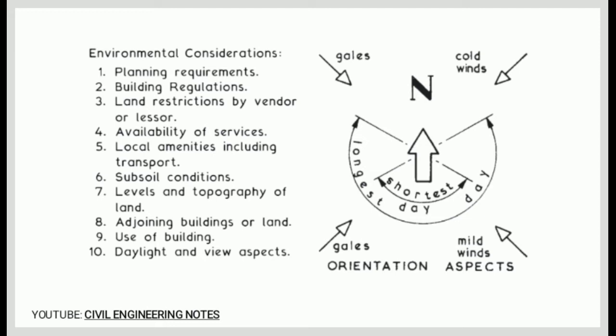On this slide, we are listing 10 environmental considerations before construction: 1. Planning requirements, 2. Building regulations, 3. Land restrictions by vendor or leasor, 4. Availability of services, 5. Local amenities including transport, 6. Subsoil conditions, 7. Levels and topography of land, 8. Adjoining buildings or land, 9. Use of building, 10. Daylight and view aspects. On the drawing, you can see the designer checking the area and locating where the gales, cold winds, and mild winds direct the building.